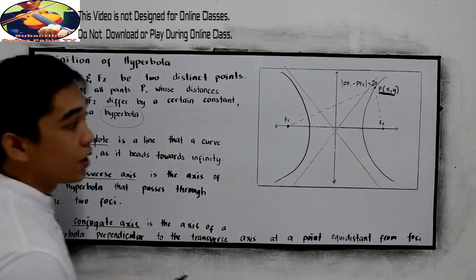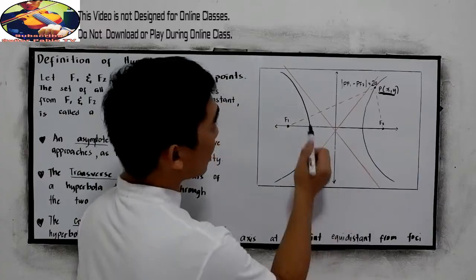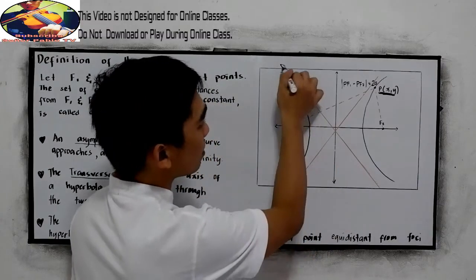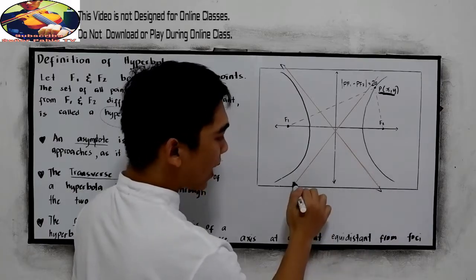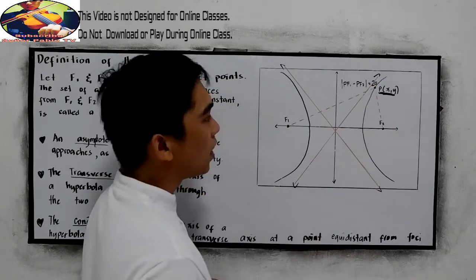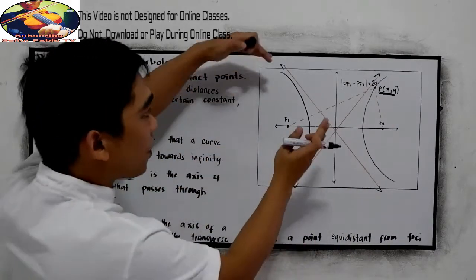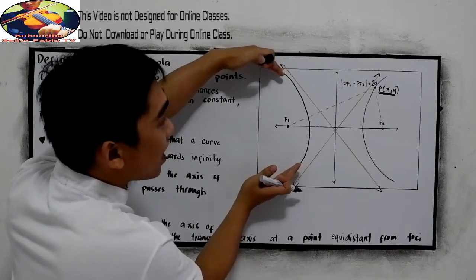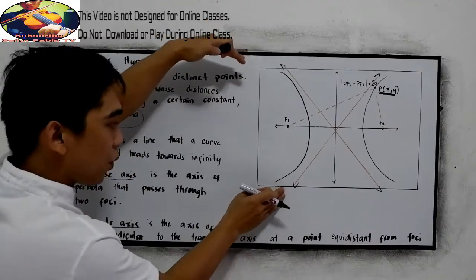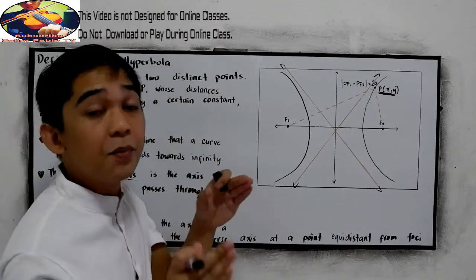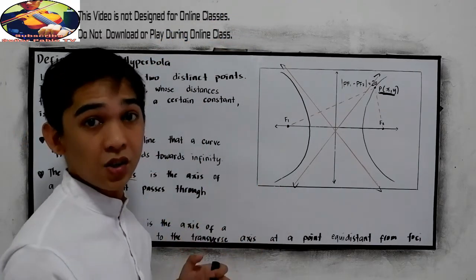So our asymptote is a line, this line. We have two asymptotes: the first line and the second line. Our hyperbola, if we extend it, will draw closer and closer to our asymptote, but they will never meet or touch each other.